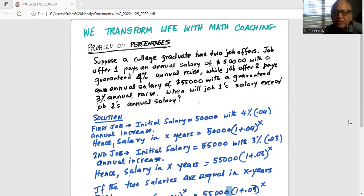Suppose a college graduate has two job offers. Job offer one pays an annual salary of $50,000 with a guaranteed 4% annual raise, while job offer two pays an annual salary of $55,000 with a guaranteed 3% annual raise.